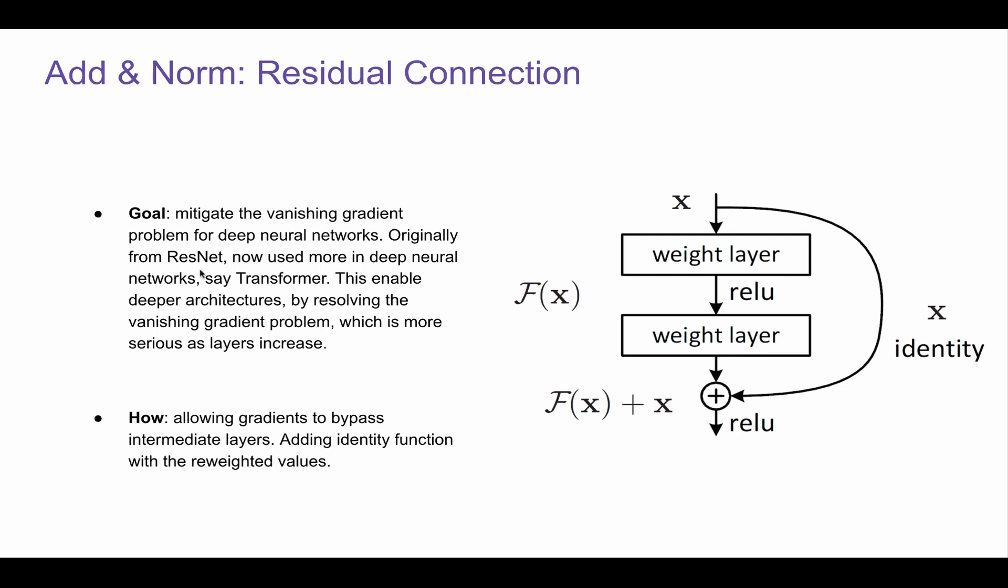Before I talk about this, you can take a look at the graph on the right-hand side. x is, let's say, some input. Some of it is going to go through the deep neural network, including ReLU. And then it's going to get F(x), which is the gradients. And then instead of passing the gradients directly through the next layer, it also adds its own identity function. It's just a fancy way of saying itself.